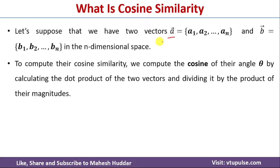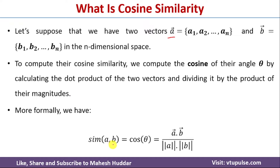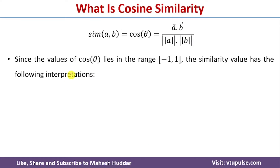The cosine similarity between A and B is calculated using the dot product of these two vectors divided by the product of their magnitudes. That is, the similarity between A and B is equivalent to cos theta. Since the value of cos theta lies in the range of minus 1 to plus 1, the similarity value has the following interpretations.